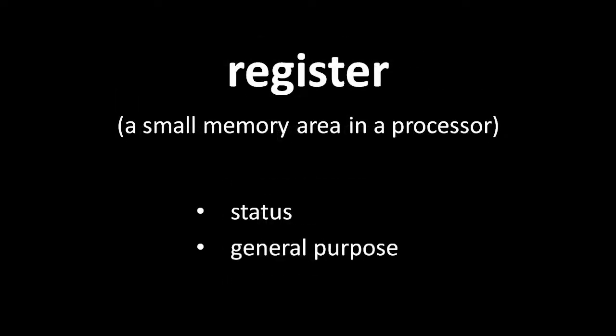A register is a small, volatile data storage area inside the CPU. The CPU's registers can be categorized into two kinds: status registers and general purpose registers. A status register stores data that affects the operation of the CPU. For example, some CPUs operate in different modes, and so such a CPU will typically have a status register in which the bits designate the current mode.